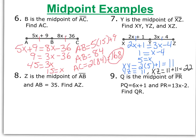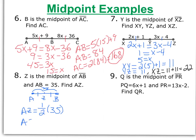Number 8: Z is the midpoint of AB, and AB is 35. Find AZ. If you want, draw a line segment to help visualize it. So we have AB with Z as the midpoint and the whole segment is 35. Since it's the midpoint, the two parts are congruent. To find AZ, I take half of the total line segment, so AZ is 17.5.